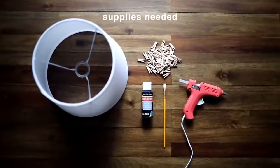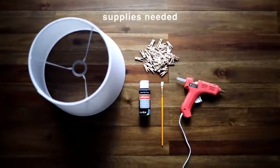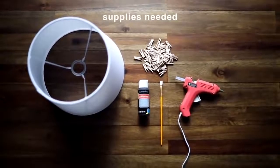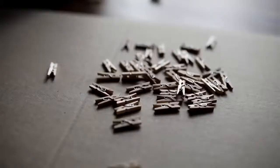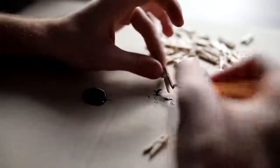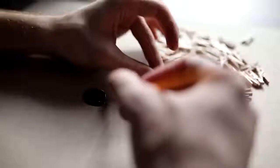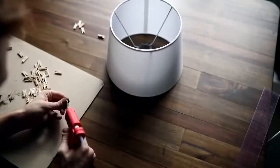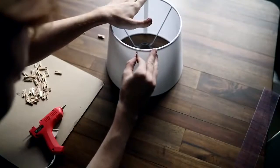This DIY may be the easiest but it's one of my favorites. All you're going to need is a lampshade, some wood clips, paint, and a hot glue gun. Super minimal supplies. I first started off by taking my wood clips and painting them black, and I just painted half of them black because I actually wanted it to be a variety of wood and black.